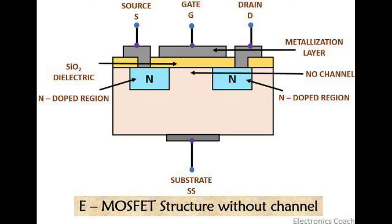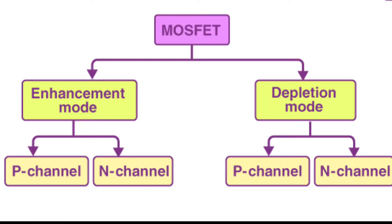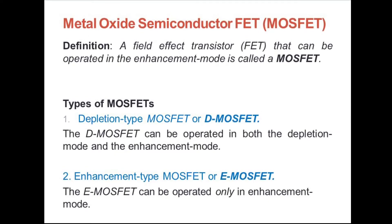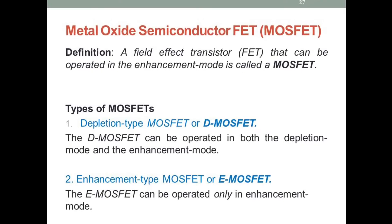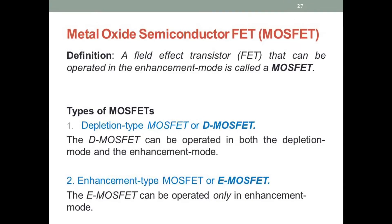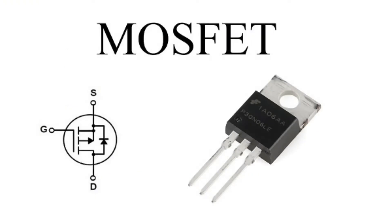MOSFET types: there are two classes of MOSFET — depletion mode and enhancement mode. The voltage at the gate controls the operations of the MOSFET.